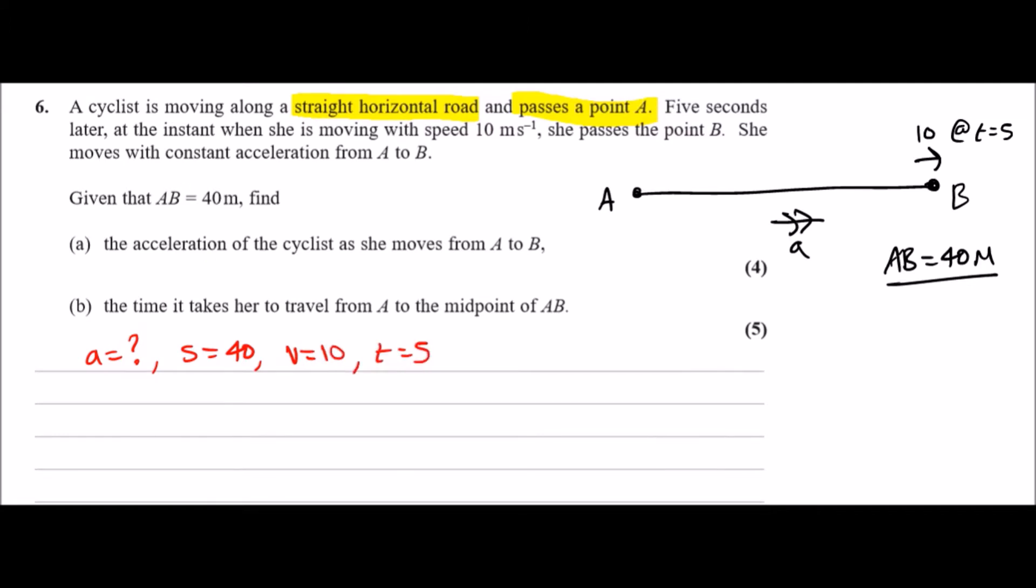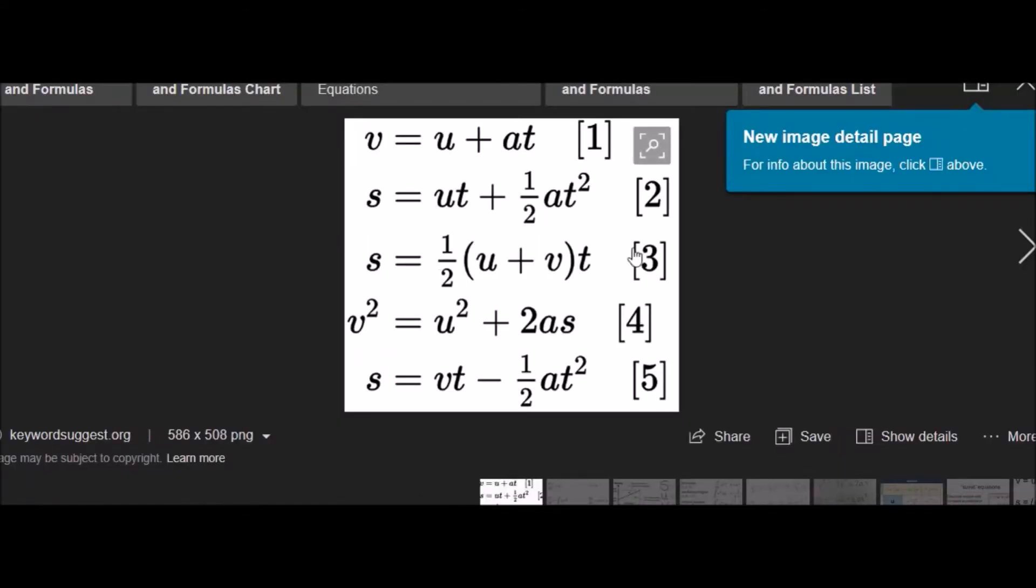There is one equation, but it's always best to look at this together. Here are the listed SUVAT equations from Google. We need one that relates s, v, t and a. Ignore all the u ones, so ignore the first, second, third, fourth. We need the last one: s equals vt minus half at squared. I always write this down and just see what is missing.